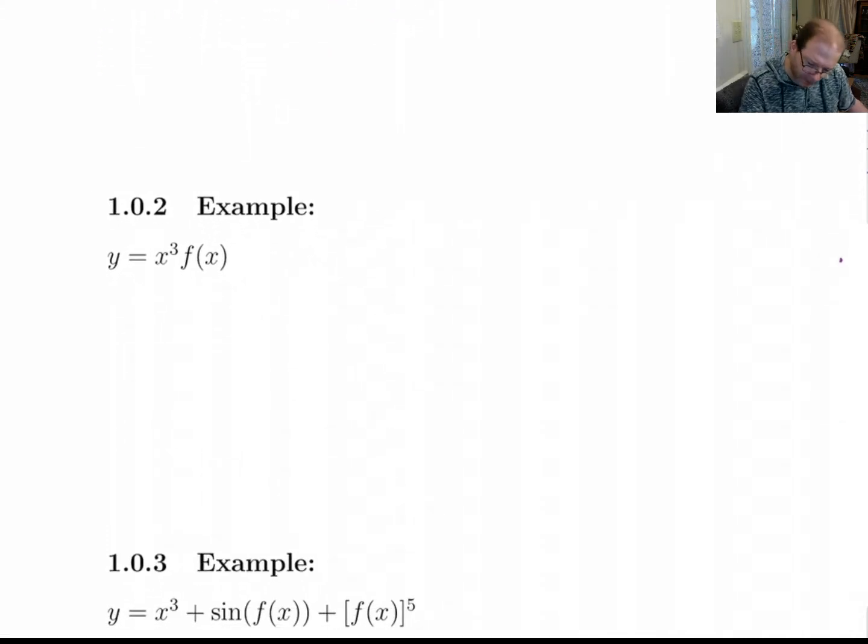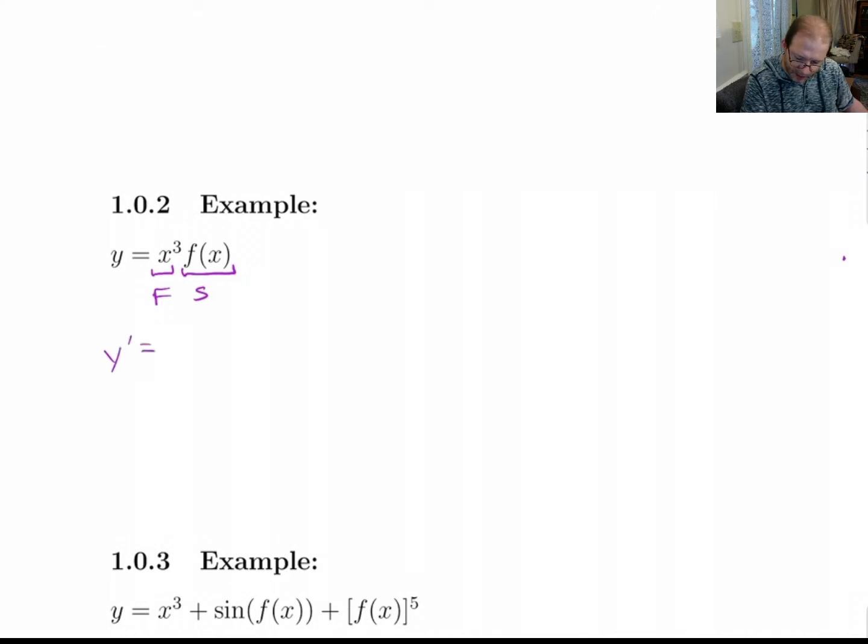Now down here, we've got x³ times f(x). We've got to use the product rule on this. We've got the first and second. So y' is going to be first times derivative of the second plus the second times derivative of the first.